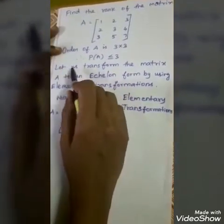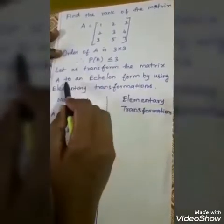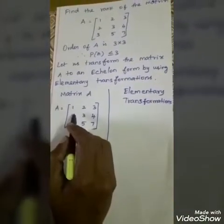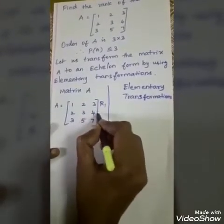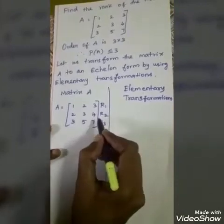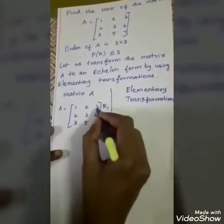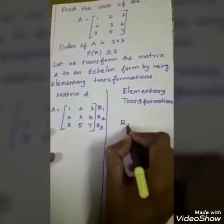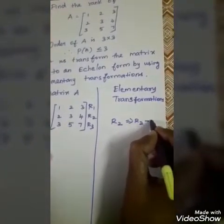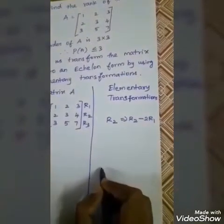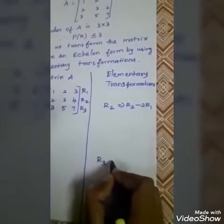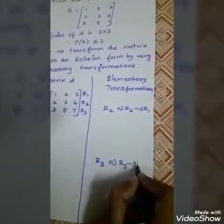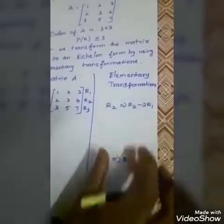Now we are moving to transform matrix A to Echelon form using elementary transformations. We have rows R1, R2, R3. I am doing R2 equals R2 minus 2R1, and R3 equals R3 minus 3R1. You can try any other transformations — any other way we can do it.